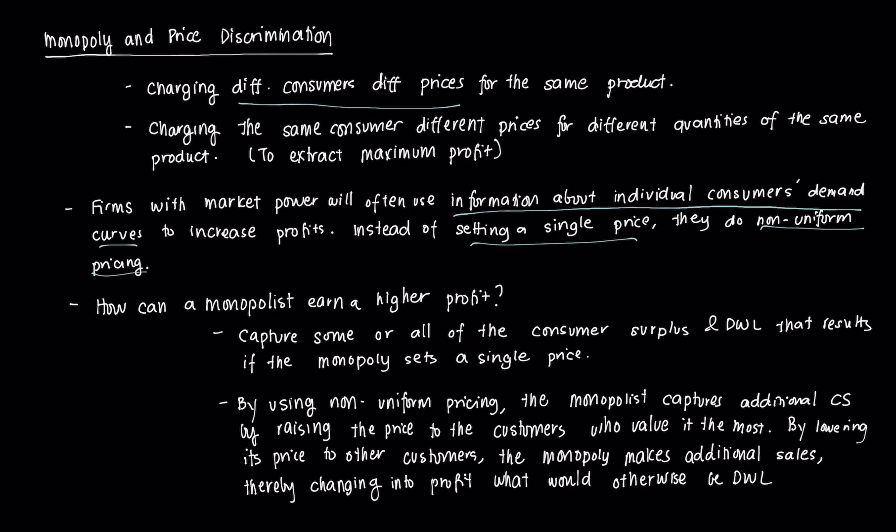How can a monopolist earn a higher profit when it engages in price discrimination? A monopolist that uses non-uniform pricing can capture some or all of the consumer surplus and the deadweight loss that results if the monopoly sets a single price. We recalled in the last videos that the consumer surplus of a monopoly is less than the consumer surplus of a perfectly competitive market, and in a monopoly there exists some deadweight loss.